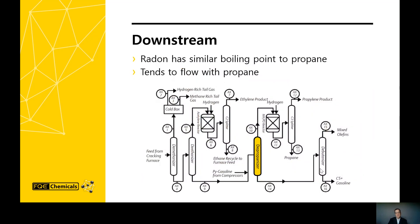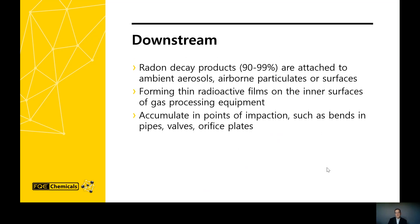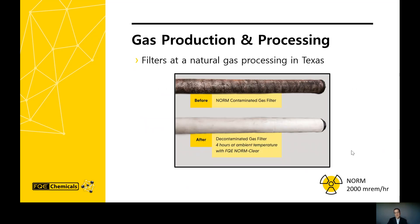Downstream, in a typical fractionation train for natural gas as shown here, because radon preferentially travels with the natural gas and has a similar boiling point to propane, a disproportionately high percentage of radon can concentrate in the propane streams and, to a lesser extent, the ethane stream. Also downstream, a majority of the radon decay products attach themselves to ambient aerosols or particles, thus forming a thin film or layer on the inner surfaces. Therefore, they begin to accumulate at points of impaction, such as bends with elbows in the pipe and orifice plates.